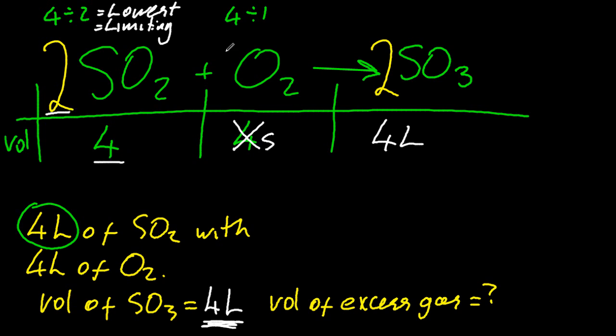The volume of the excess gas, well, I use two litres of oxygen from the four that I started with originally. So two litres are used from the four litres originally. So the volume of the excess gas is actually two litres.